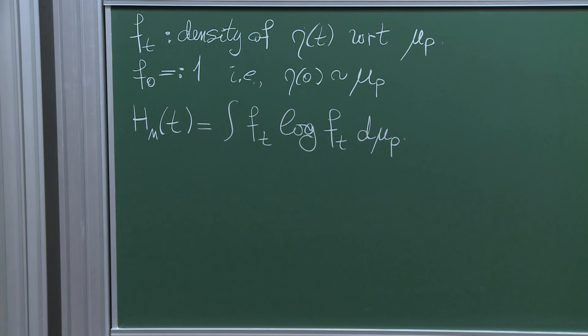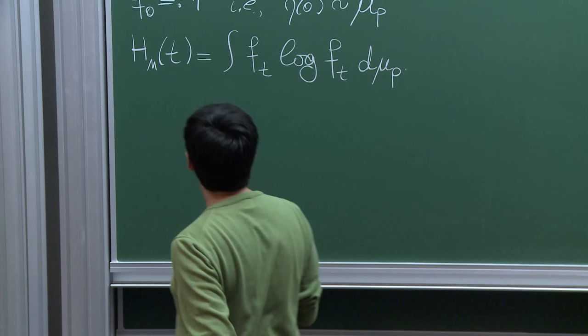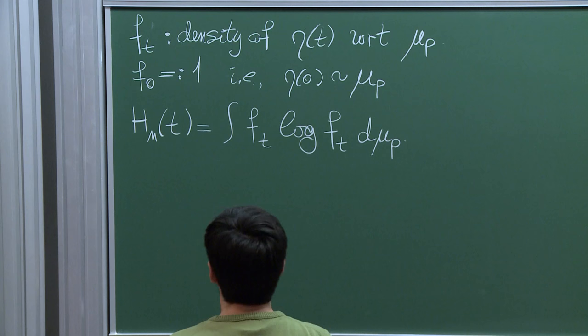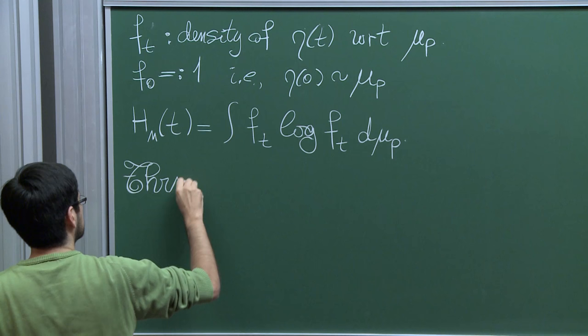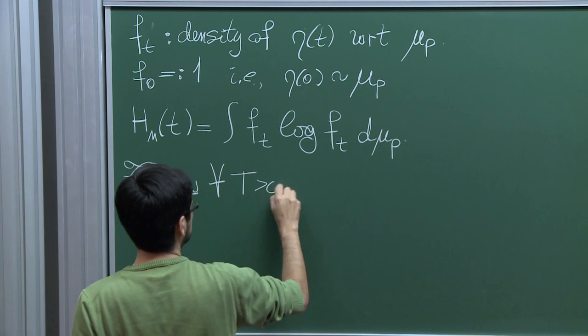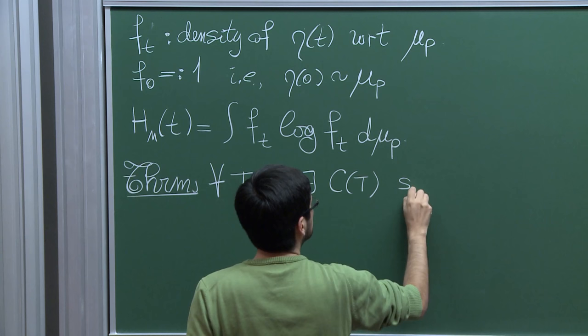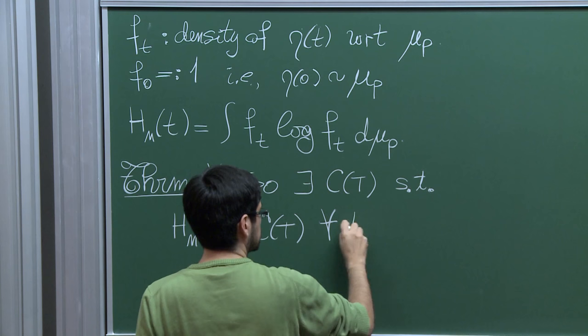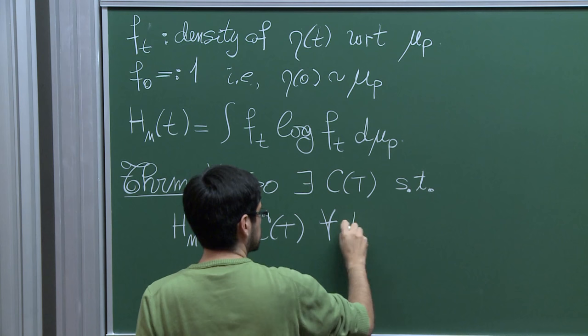This talk will be a little more mathematical than the previous one — in particular, I'm going to state a theorem. The theorem is the following: for any time T positive, there exists a constant C depending on T such that h_n(t) ≤ C for any time up to T and for any n. This is the theorem.